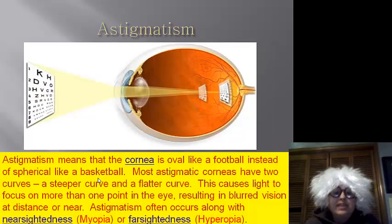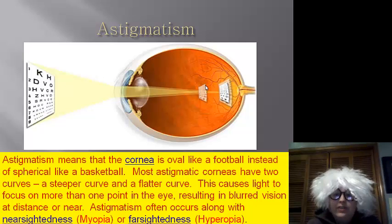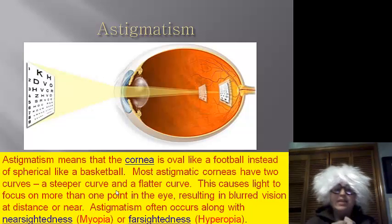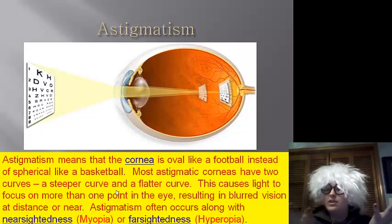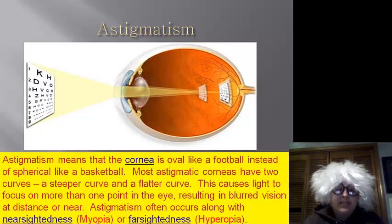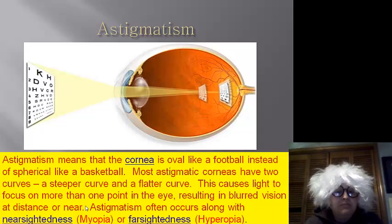Astigmatism. With astigmatism, instead of the cornea being round, it is actually oval. This causes differences in the focusing of the image. With astigmatism, you typically see one of two things: they can either focus on distance or on near. This tends to cause either nearsightedness, called myopia, or farsightedness, called hyperopia. You do need to know these: nearsightedness is myopia, farsightedness is hyperopia.